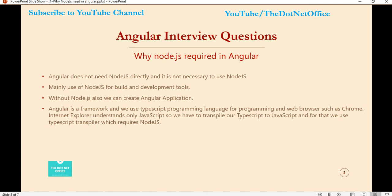When we create an Angular application, we write all the code in TypeScript, but browsers understand only JavaScript. So when we run our application on the browser, we need something to transpile — that is, convert TypeScript into JavaScript. For that we use the TypeScript transpiler, which requires Node.js. That is the main reason we use Node.js — to make our Angular application easy to build and run in the browser.